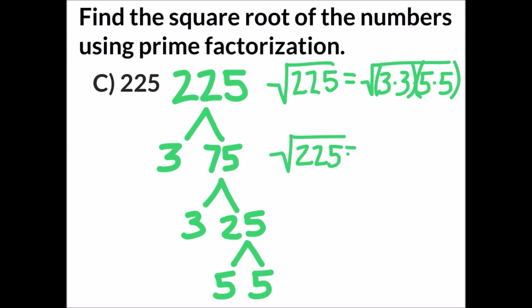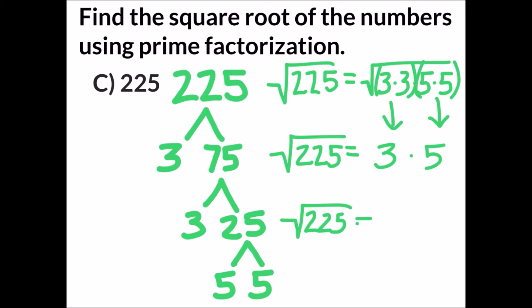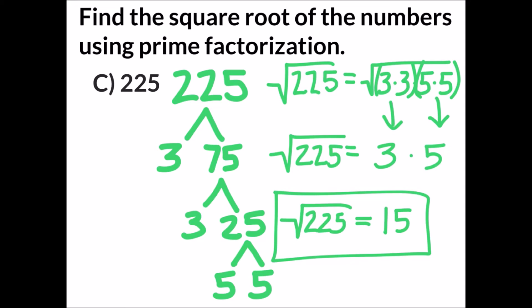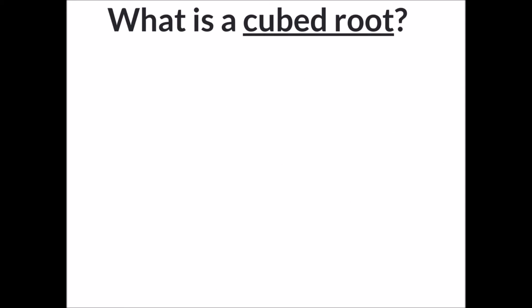We can write the pairs as 3 times 3, and 5 times 5. To simplify, the square root of 225 equals: take one number from each pair — from the first pair that's 3, multiplied by the second pair which is 5 — so the square root of 225 equals 15.